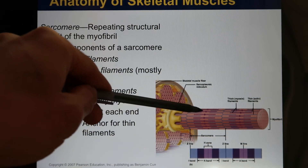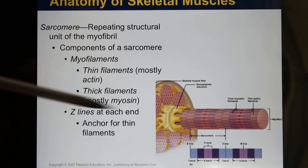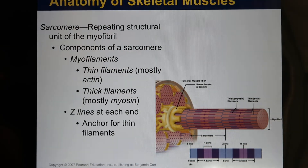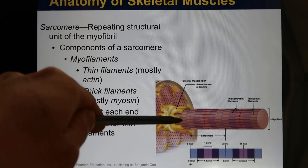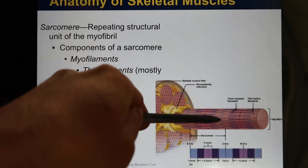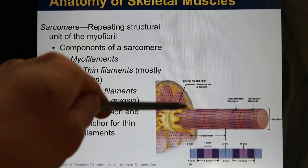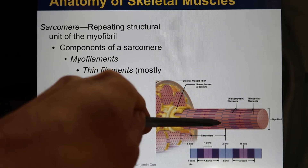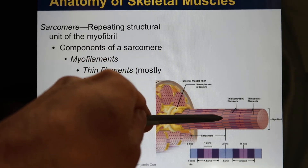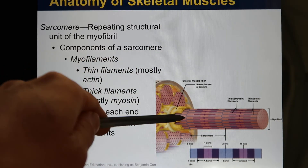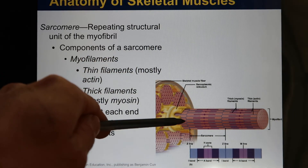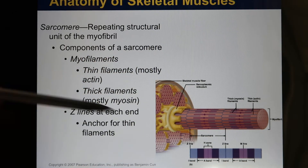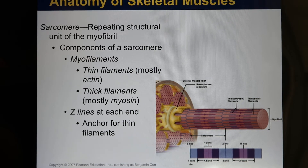Between one Z-line and another Z-line, there is one sarcomere. The Z-line is the zigzag line. From one Z to another Z, that is one sarcomere. Skeletal muscle just has these repetitive structures.